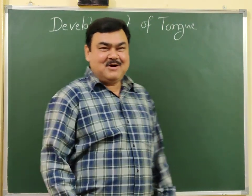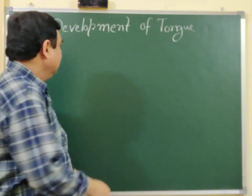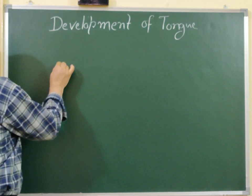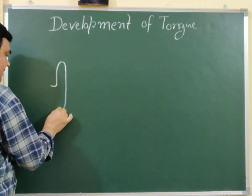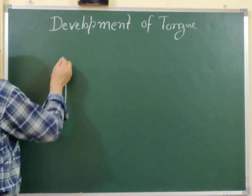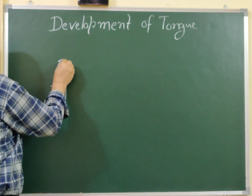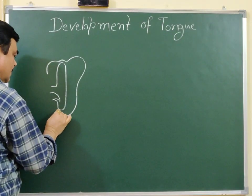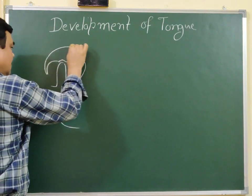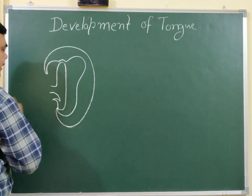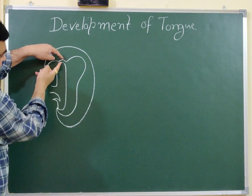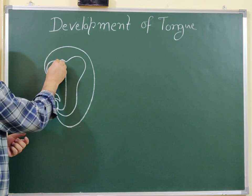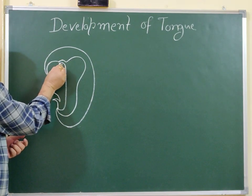Now we will discuss about the development of the tongue. First of all, this is a developing embryo. This is the developing foregut, midgut, and hindgut. Here is the buccopharyngeal membrane. In the cranial part of the foregut, a series of thickenings appears here.